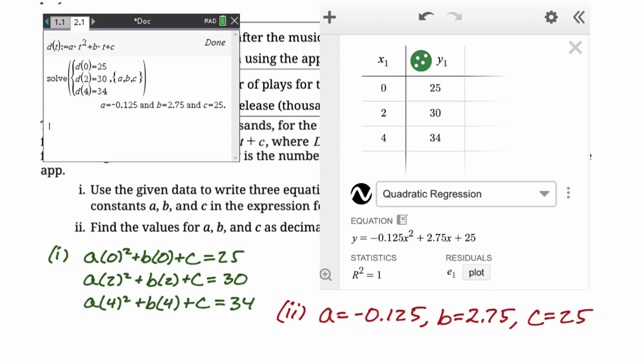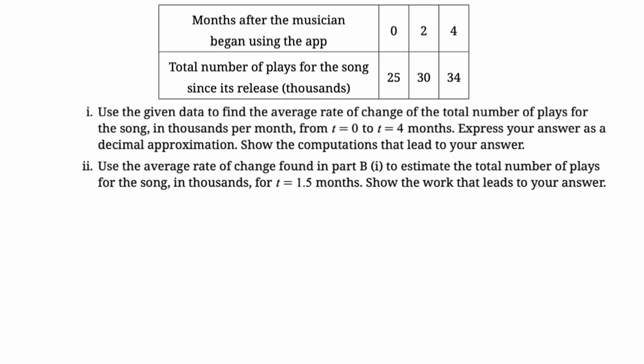All right, the next part is also basically always going to be the same. We want to use the data to find the average rate of change on the interval from zero to four months. So average rate of change is just algebra one slope. So we're going to have to go from zero to four. So we have the ordered pair four comma 34, the ordered pair zero comma 25. We're just finding slope. So 34 minus 25 over four minus zero. This is calculator, so you can use a calculator on it, 2.25. So that's the average rate of change.